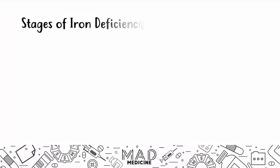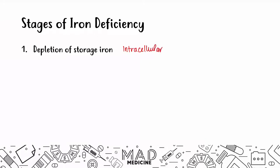The stages of iron deficiency anemia are very important. Number one, you're going to have a depletion of your storage iron. Inside your cells, your iron is stored with a protein called ferritin. You're going to have a decrease or depletion of your intracellular storage, which in lab findings means you're going to see a decrease in ferritin and an increase in total iron binding capacity. Because you've lost intracellular storage, your body signals for TIBC — transferrin — the protein that transports iron in our blood to the liver and bone marrow — to increase in order to bring more iron to the cells.